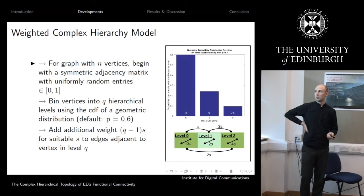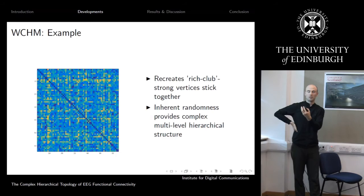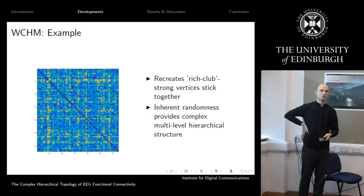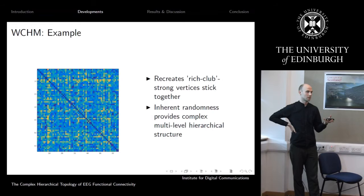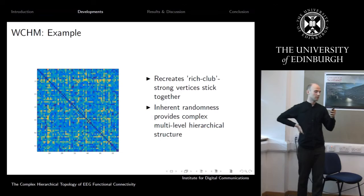When we do this, we get an adjacency matrix that shows randomness but also has nodes with higher weights, indicated by yellow in the visualization. This also creates the rich club topology discussed earlier: if two nodes are in the same hierarchical level, they receive double the additional weight for that level. So if it's a high level, those two nodes get a very high additional weight and will generally have a strong connection.